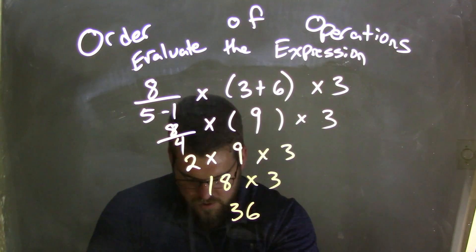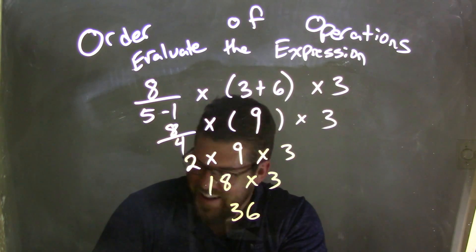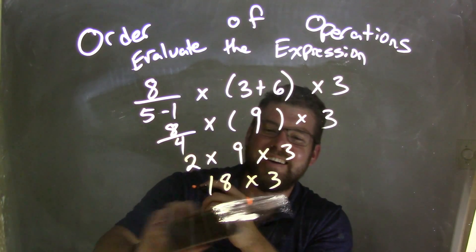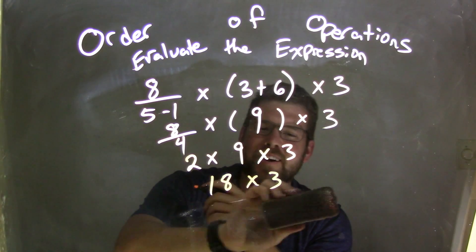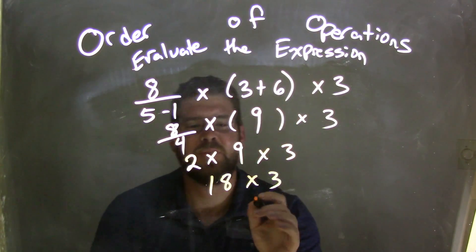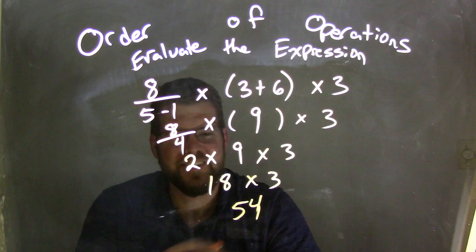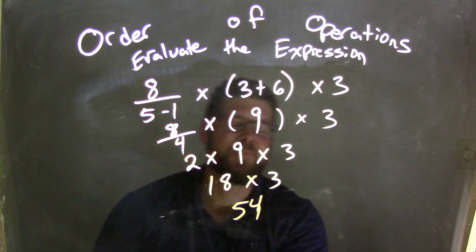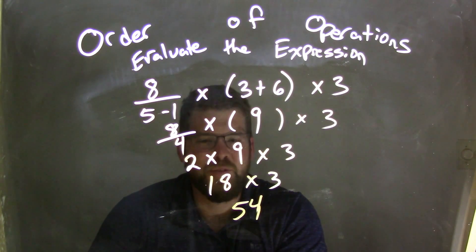And there's a... Not 36. Oh my goodness. 54. And 18 times 3 is 54. Not 36. Oh my goodness, I was thinking 18 times 2. 18 times 3 is 54.